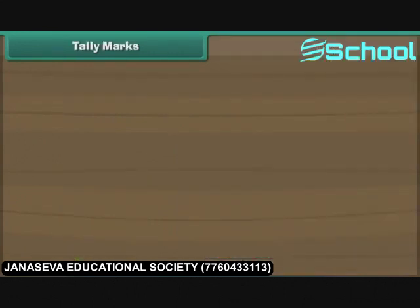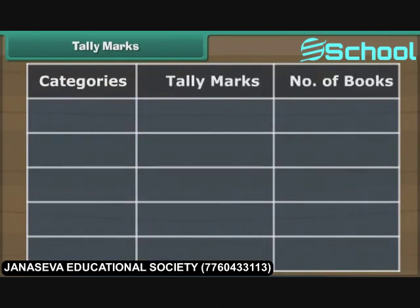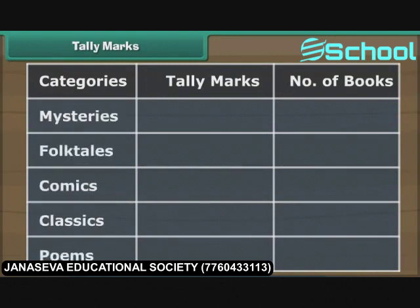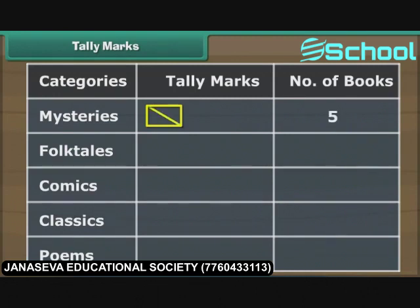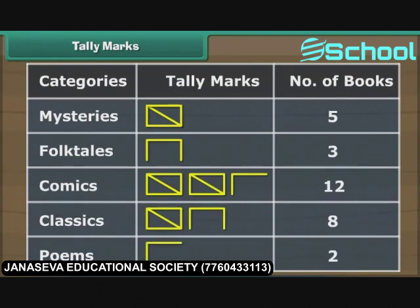Tally marks. Now, let us organize Ravi's data with the help of tally marks. Make three columns: categories, tally marks and number of books. Write down the five different categories under the categories column. Draw a vertical line against the mysteries category under the tally marks column for the first book. Draw a horizontal line for the next book, a vertical line for the third, and a horizontal line for the fourth to complete the rectangle. Represent the fifth mystery book with a line drawn between two opposite ends of the rectangle. We repeat the exercise for other categories of books. The end result is a tally marks table.